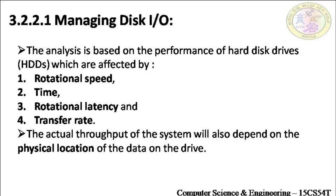Rotational latency is the time taken by the sector to come under the read and write head. The transfer rate is the amount of data transferred to and fro from the memory in unit time. The entire performance of the hard disk also depends upon the physical location of the data on the drive. All these characteristics determine the performance of hard disk drives.